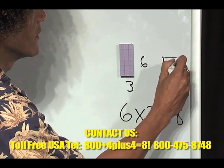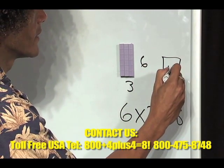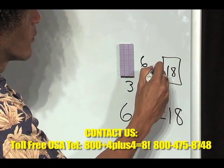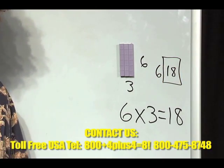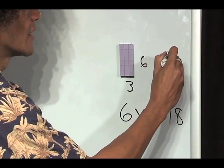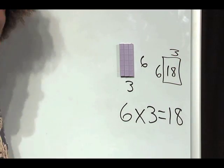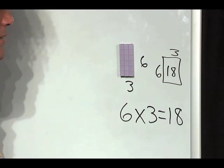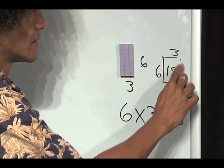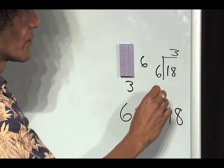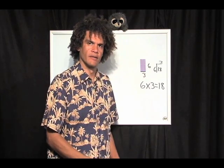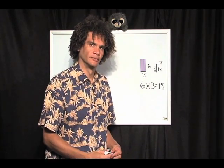Now, if I have a rectangle and the whole thing is eighteen, and one side is six, what does the other side have to be? It has to be three. So we can see that 6×3 is 18, but now we can see some division, because really this symbol right here is shorthand for division.